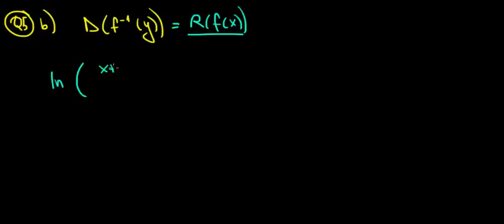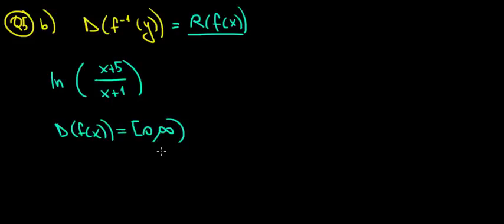Our function was ln of x plus 5 divided by x plus 1 and the domain of our function is from 0 until infinity. So let's have a look first at the function x plus 5 over x plus 1.